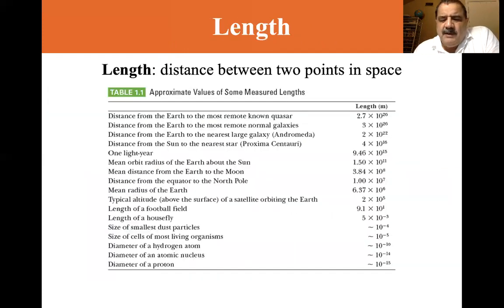Let's get on with length. Length is the distance between two points in space. We typically use meters. In America we use miles and feet, imperial units, but in SI we use the meter. The distance from Earth to the most remote known quasar is 2.7 times 10^26 meters. One light year is 9.46 times 10^15. The mean orbit radius of Earth about the Sun is 1.5 times 10^11 meters.